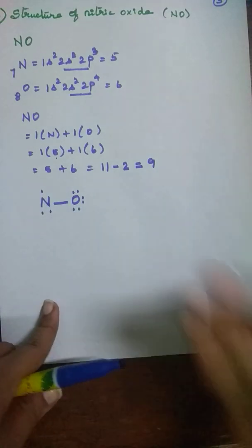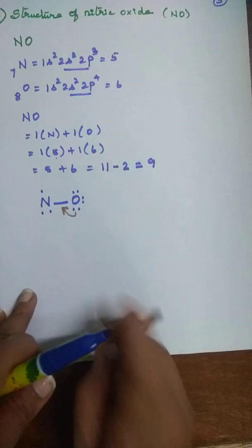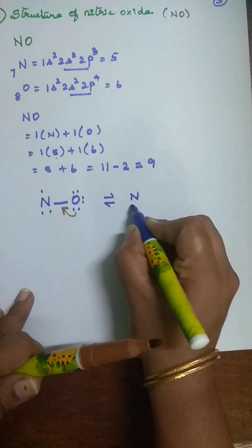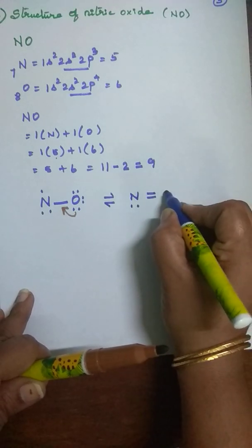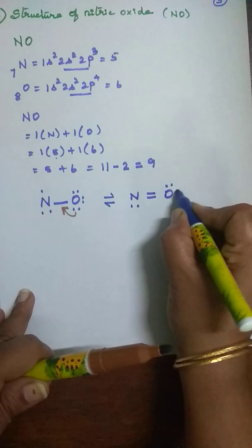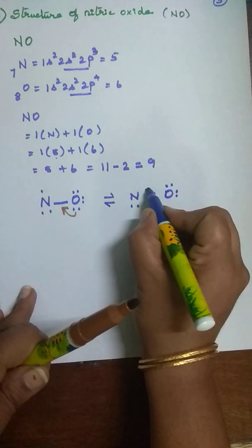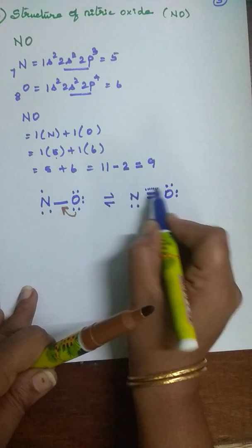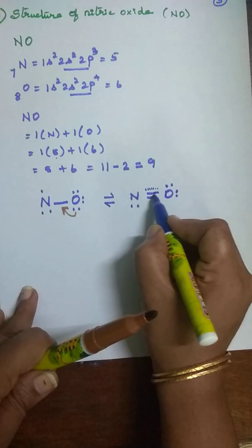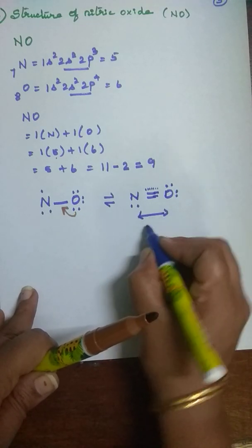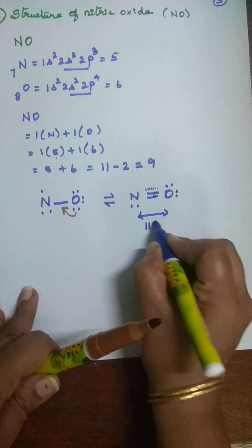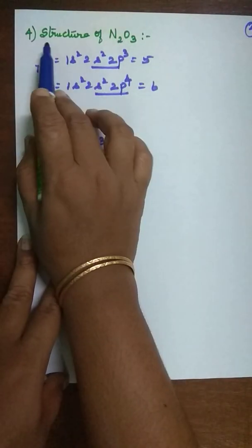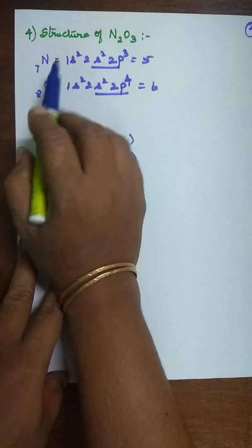To satisfy the octet rule for nitrogen, a lone pair migrates from oxygen toward nitrogen, forming a double bond. The final structure is written with a dot-dot notation in textbooks to indicate the one unpaired electron present on nitrogen and one lone pair on oxygen. This dot structure is an exception — it explicitly shows the single unpaired electron. The bond distance between nitrogen and oxygen in nitric oxide is 115 picometers.